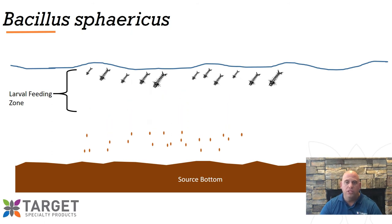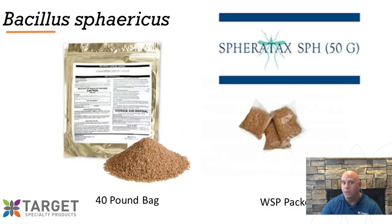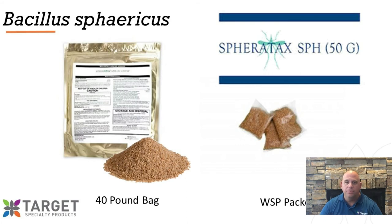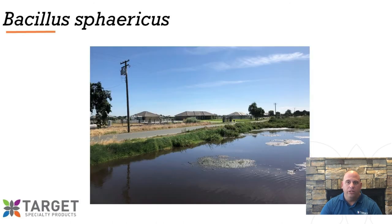When you see third and fourth instar larvae, recycling has slowed or has pretty much stopped. Currently, Target Specialty Products offers a granular option in two formulations — it's called SphereTax SPH-50G, and it comes in a loose granular 40-pound bag or in a case of 800 WSP packets. The WSP packets are great for street stormwater basins. Sphaericus can recycle in high larval density environments where there is a continuous introduction of new larvae, just like in these stormwater basins. The loose granular option is great for sites such as animal waste lagoons or dairy lagoons — sites that have high organic matter and high larval densities.